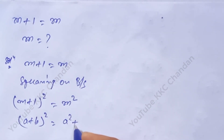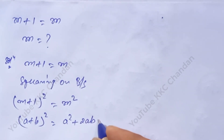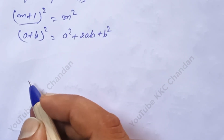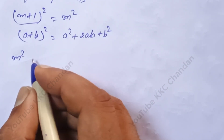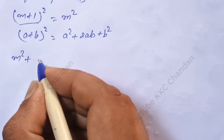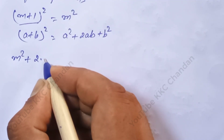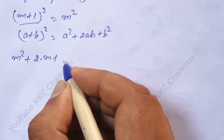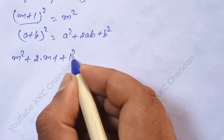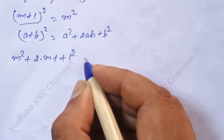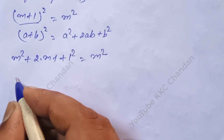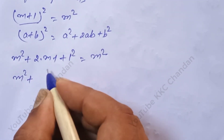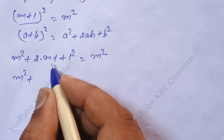We know that (a + b) whole square formula is a square plus 2ab plus b square. Applying this formula here: m square plus 2 into m into 1 plus 1 square is equal to m square.